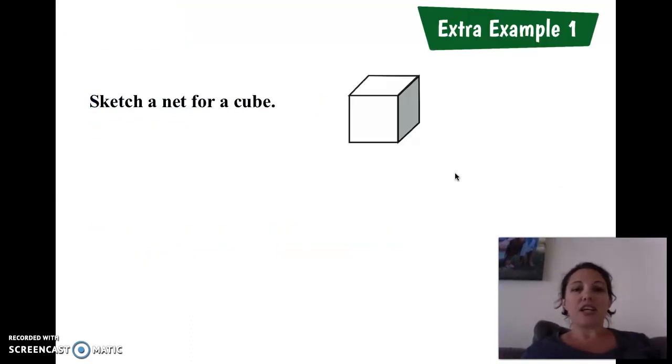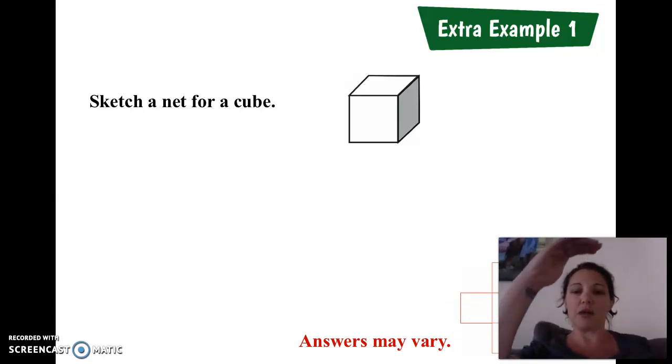A net for a cube. A cube is a three-dimensional square. It has six faces and every face is a square. I'm going to show you one example of a cube's net but there are actually several. So this is a net for a cube. We could make this the bottom, this would be the back and the front, this would be the left side, this would be the right side and this piece right here would fold over the top. That would be like a box.